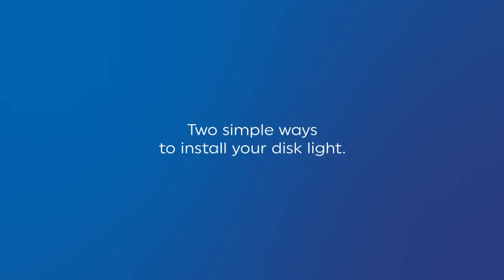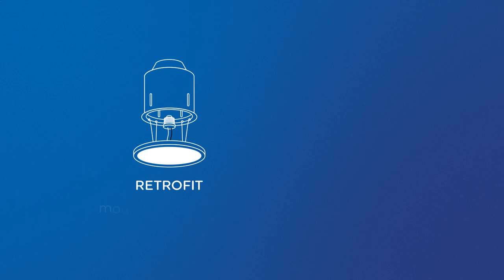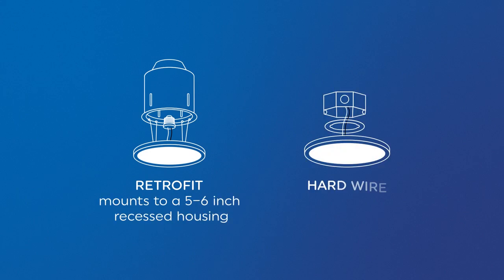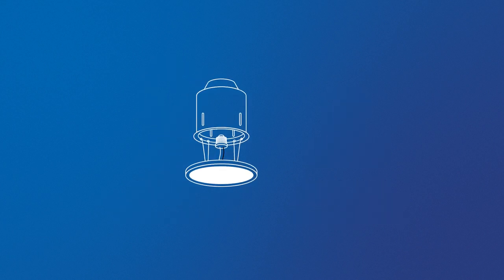There are two simple ways to install your disc light. It can be retrofitted into an existing recessed can with a medium-based socket, or hardwired into an existing junction box. We're going to start by showing you how to add it to your